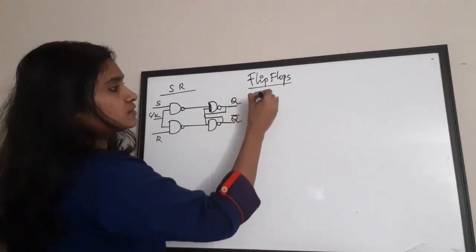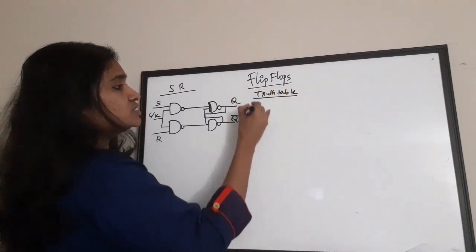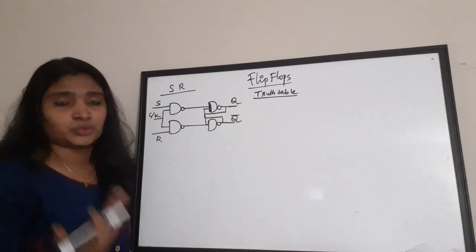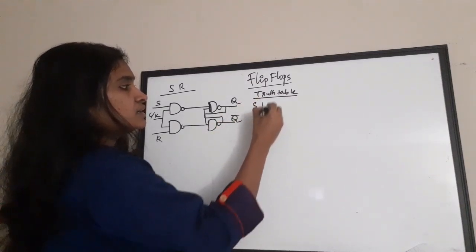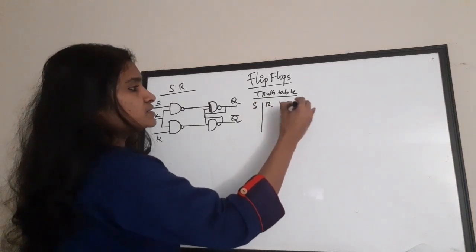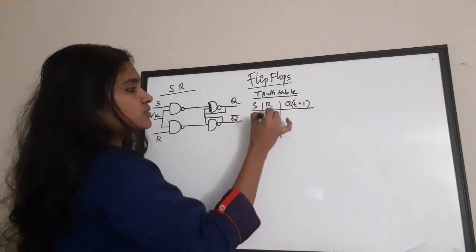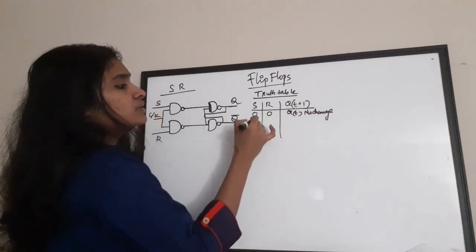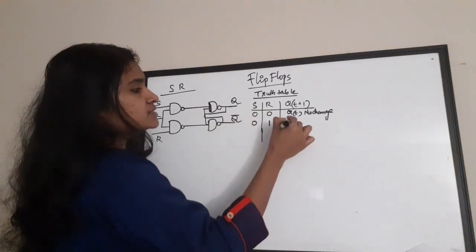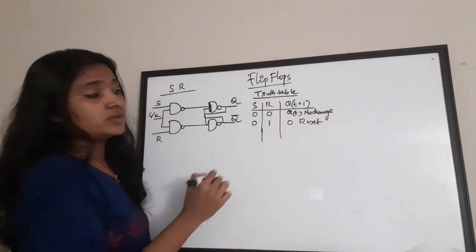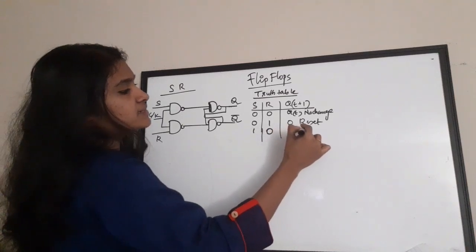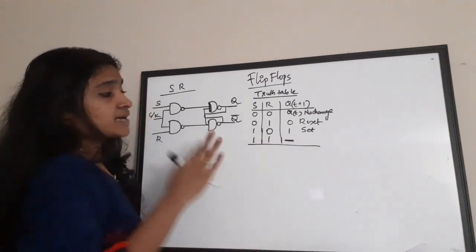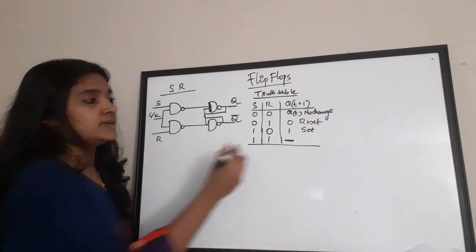Now let us see the truth table of the SR flip-flop. This truth table is drawn by giving various combinations for S and R and considering what is the next state output, QT+1. For the combination 0,0: QT+1 is QT — no change. For 0,1: it is 0 — reset state. For 1,0: it is 1 — set state. For 1,1: it is not stable; it is racing between 0 and 1, which we call the race condition.